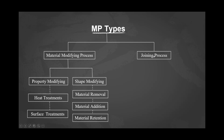The second main type of manufacturing process is the joining process. Joining processes include welding, brazing, soldering, mechanical fastening, and adhesive bonding. In joining processes there are permanent, non-permanent, and semi-permanent joints.